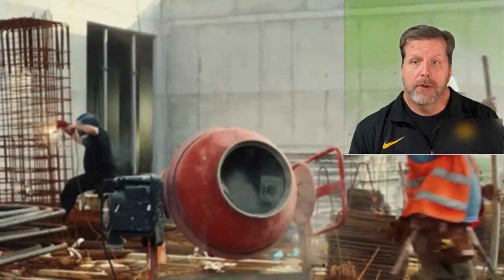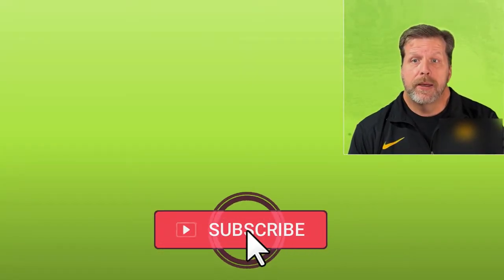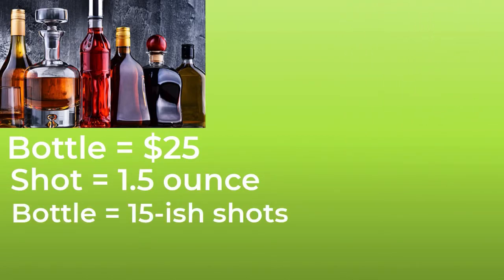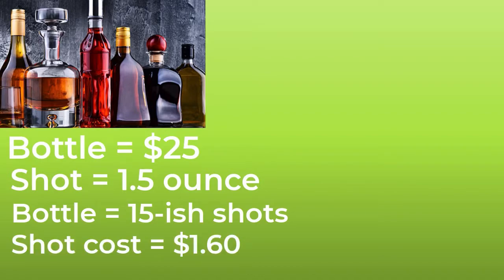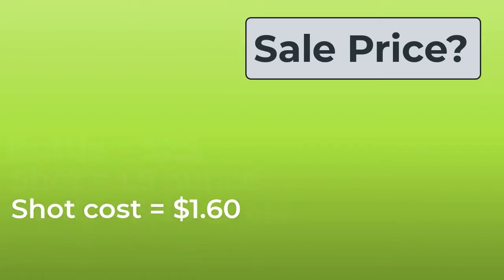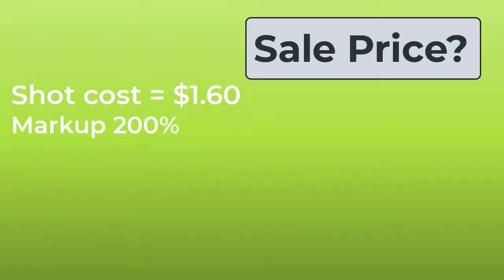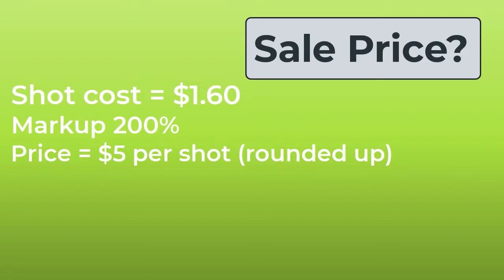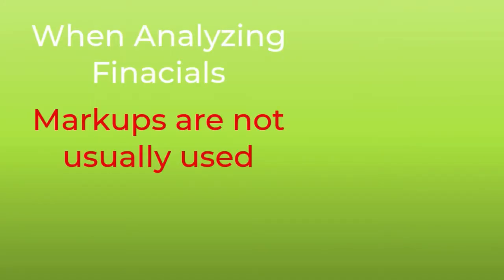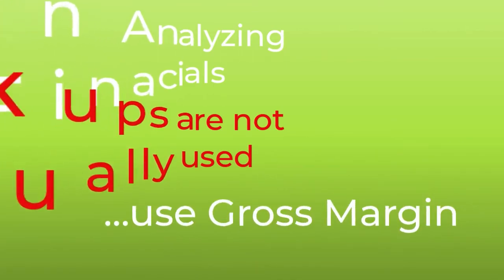When you are thinking of what price to offer to your customers, you often think in terms of a markup. In these examples, I will be oversimplifying a bit. In the bar scenario, if the bottled liquor costs $25, your shots are about 1.5 ounces each. You might get 15 or 16 shots per bottle. The cost per shot to the bar is about $1.60. Knowing this, you think about how much to sell your shots to the customer for. Often, you will think in terms of a markup. If you markup the cost by 200%, then your selling price might be around $5 per shot. If you markup your cost by only 100%, then your selling price might be around $3 to $3.50 per shot. When you analyze your income statements, you generally do not use markup — you use gross margin. What's the difference? Let me show you.